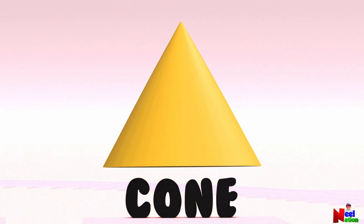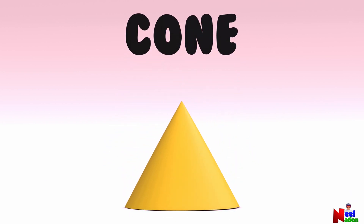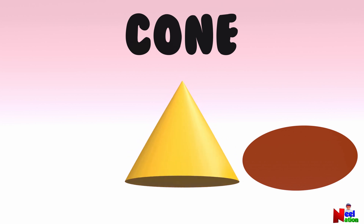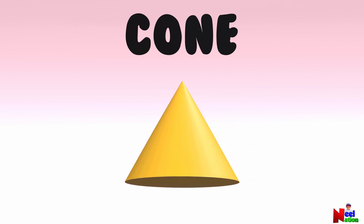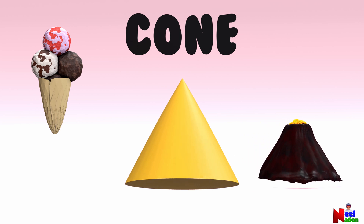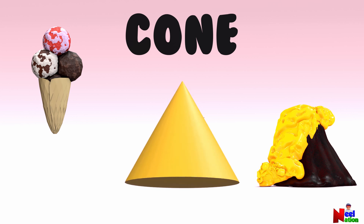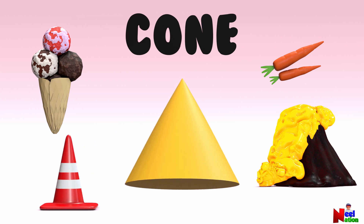The cone looks like a triangle, but it has a flat circular base and the shape narrows smoothly to a point called an apex or vertex. Can you find some things that are cone-shaped? Ice cream cone — yes! A volcano, carrots, and traffic cones — yes, you are right!